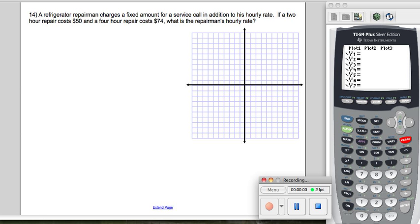This problem is an application of a linear equation. It says a refrigerator repairman charges a fixed amount for a service call in addition to his hourly rate. If a two-hour repair costs $50, that's the point (2, 50), and a four-hour repair costs $74, that's (4, 74). What is the repairman's hourly rate?